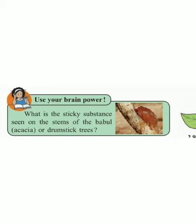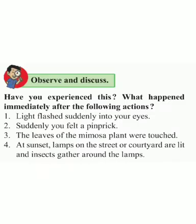After that, there is an observe and discuss activity — observation kare se and discuss kare se. Have you experienced this? — kadhi tumhi haa cha anubhav ghitla hai ka? What happened immediately after following actions? — yaa kriya ghandla hai nantar kai badal zahala ho ta? Write your answers. There are four questions — tee tumha le lihae cha hai.